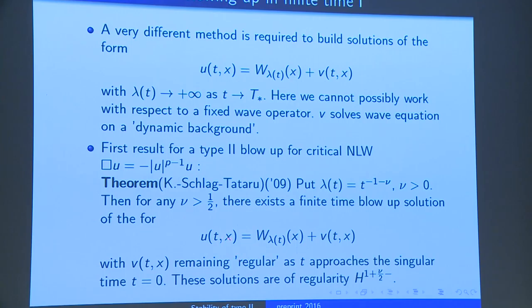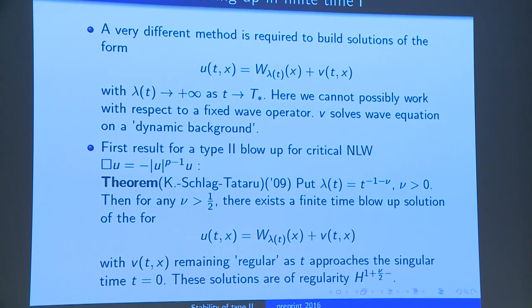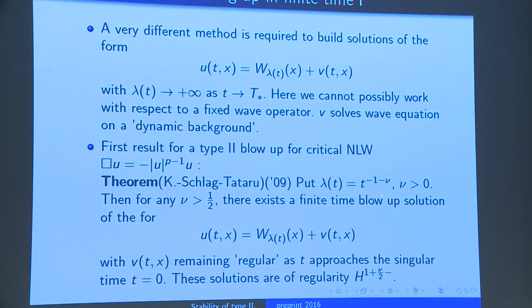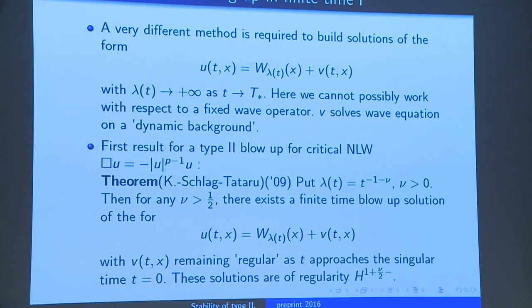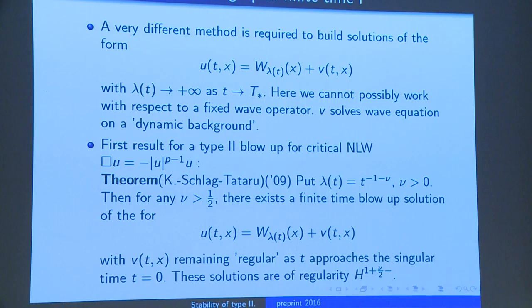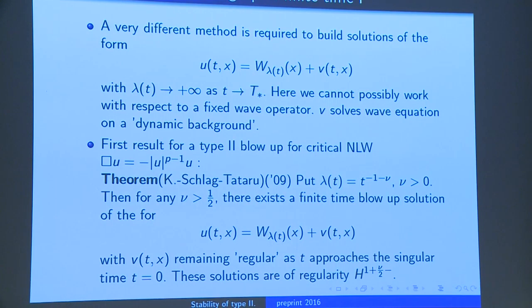The solution decouples into a bulk term — which concentrates at time zero at the origin — plus a term v(t,x) which remains regular. And somewhat interestingly, as a byproduct of our construction, these solutions are not of class C^∞; they are of lesser regularity H^{1+ν/2}. This seems to be something really germane to hyperbolic equations.